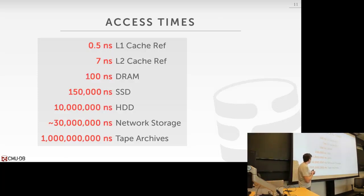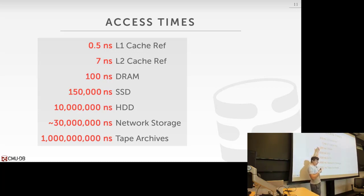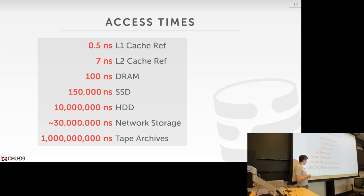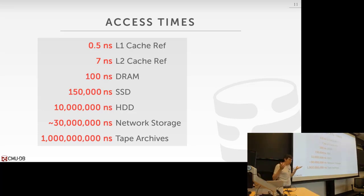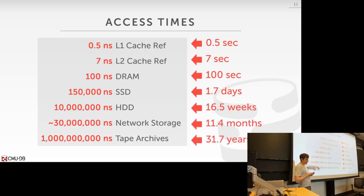Let's talk about how slow these storage devices are. Reading 64 bits from L1 cache takes about half a nanosecond. L2 is around 7 nanoseconds. Going further down the hierarchy, you get to really long delays. There's a pretty big difference between 100 nanoseconds for DRAM and 150,000 nanoseconds for disk — which is why we spend so much time minimizing the impact of reading from disk.